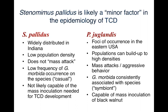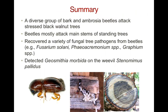However, it does cause us to wonder the extent to which other beetles might be able to transmit TCD in areas where there are symptomatic trees. In summary, there's a diverse group of bark and ambrosia beetles that attack stressed black walnut trees. They mostly attack the stems of standing trees — we collected far more beetles from stem samples than from branches. We recovered a variety of other phytopathogenic fungi, like Fusarium solanii, and we detected Geosmithia morbida on the weevil Stenomimus pallidus.